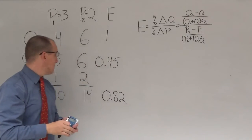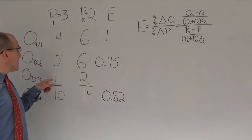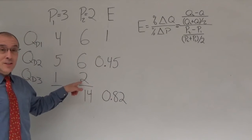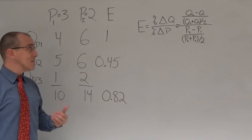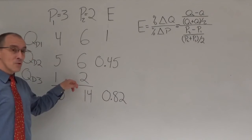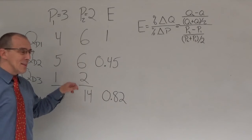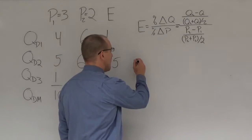Now for the last person — when the price went down they actually doubled their quantity, going from 1 to 2. That's a significant increase. This person will probably have a more elastic demand curve — let's check it out.